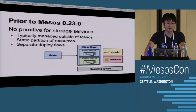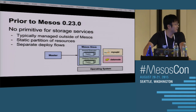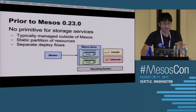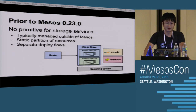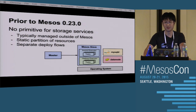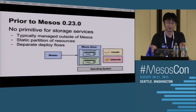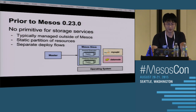Prior to Mesos 0.23, there were no primitives for storage services. Those storage services were typically managed out of band of Mesos. The resources used by those storage services were usually statically partitioned, and operators usually used a separate deploy flow to deploy those storage services. That's bad — we're going to solve that.